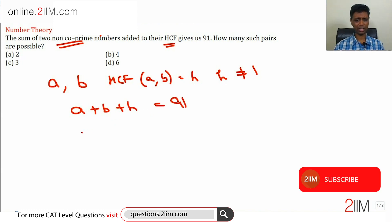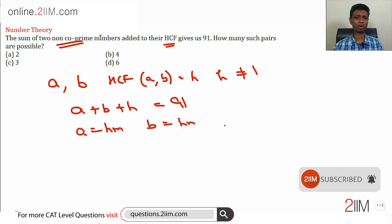We know that a plus b plus h equals 91. Now HCF of a and b is h. We know that a can be written as h into m, b can be written as h into n. H is a factor of both of these numbers. H divides a and h divides b.